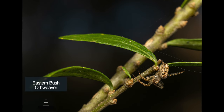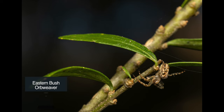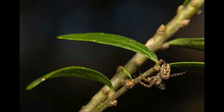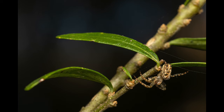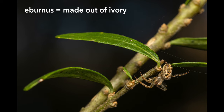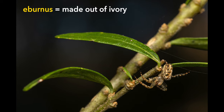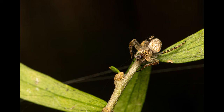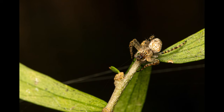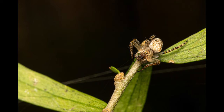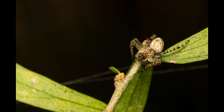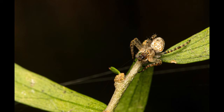The next few images are of an eastern bush orb weaver, or eastern grass orb weaver. This spider species is endemic to Australia. It's a very common spider with distinctly white markings, hence its Latin name which refers to ivory. These markings can be quite variable though. It is found in scrub and tall grasses, where the female constructs a vertical web, usually no more than 2 meters from the ground, and stays there day and night.